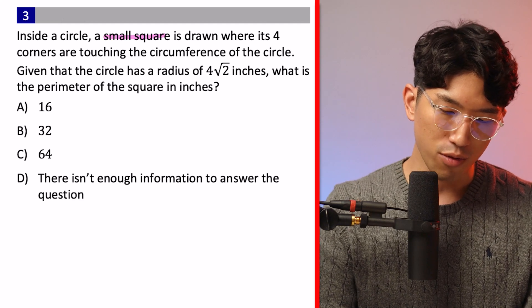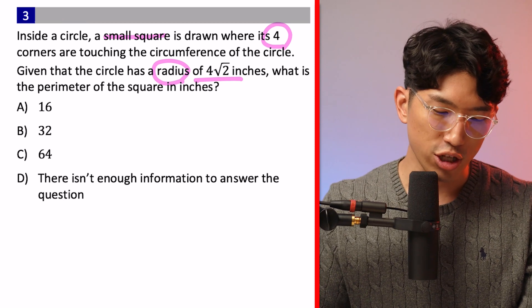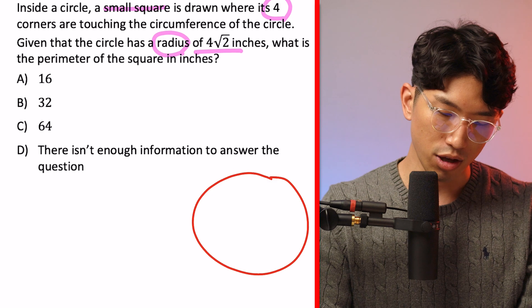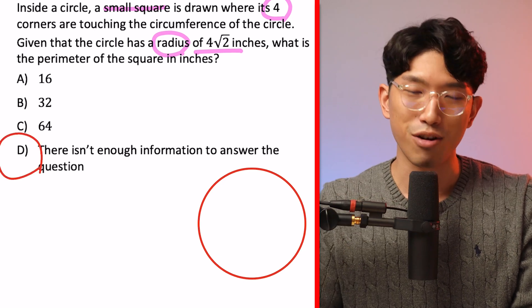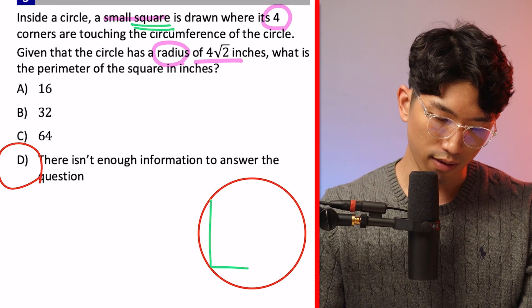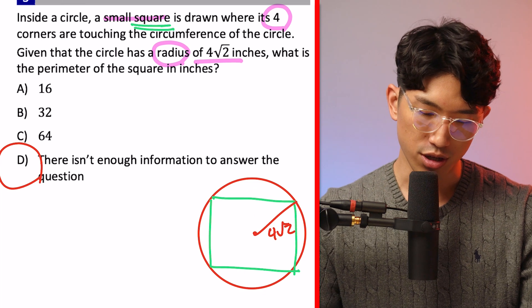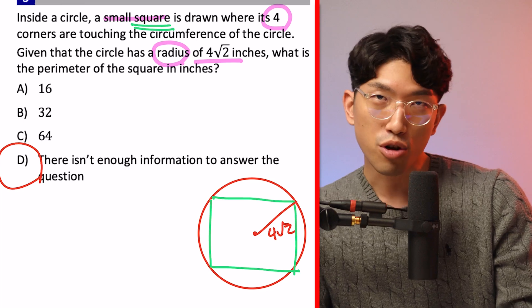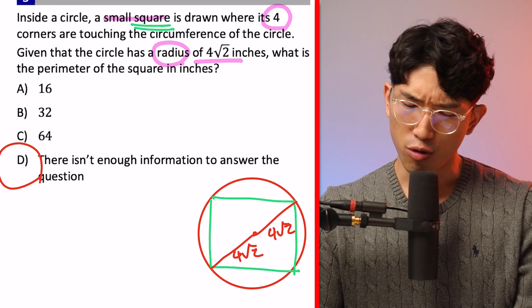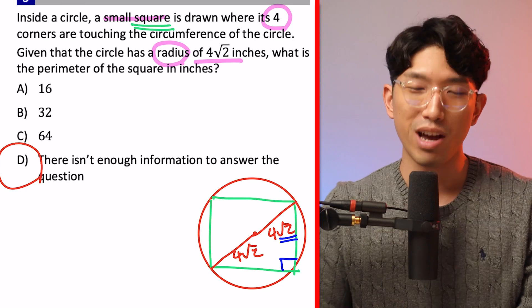The question says: inside a circle, a small square is drawn where its four corners are touching the circumference of the circle. Given that the circle has a radius of 4√2, what is the perimeter of the square in inches? Whenever you have a geometry question with a lot of words, start visualizing and drawing out what the question tells you. We have a square inscribed in the circle with radius 4√2. If we extend the radius to make a diameter, we see a right triangle formed — and more importantly, we see √2, which is a sign the question is testing us on special right triangles.